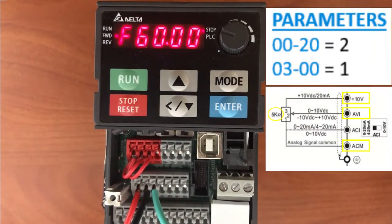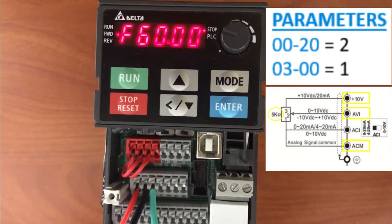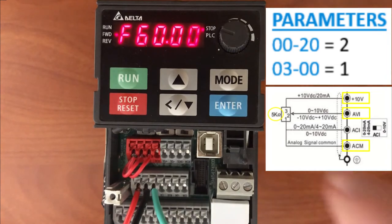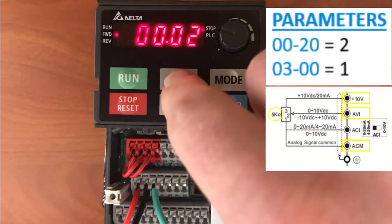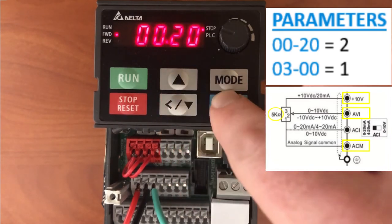I've got my drive set at factory default. I've got my plus 10 volts red wire, I've got my analog common black wire, and my blue is my AVI, my analog voltage input signal from my potentiometer. The drive is set at factory default, so I'm just going to go in and program these parameters.